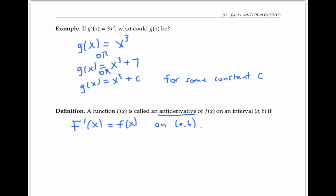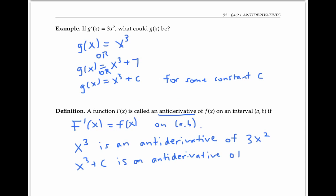In the above example, x cubed is an antiderivative of three x squared. And in fact, x cubed plus C for any constant C is also an antiderivative of three x squared. When we add on a general constant C, that's sometimes referred to as a general antiderivative.